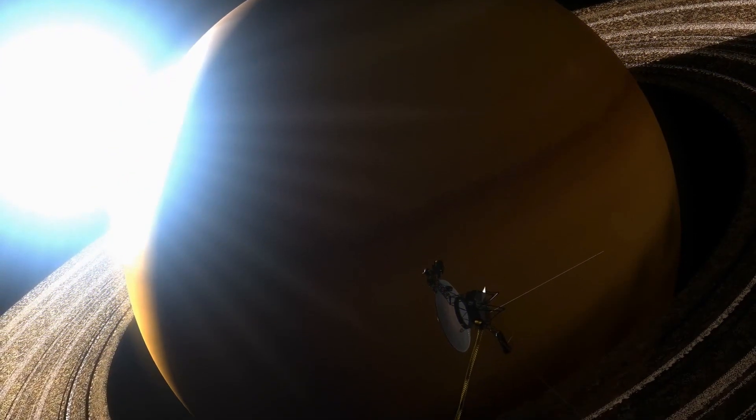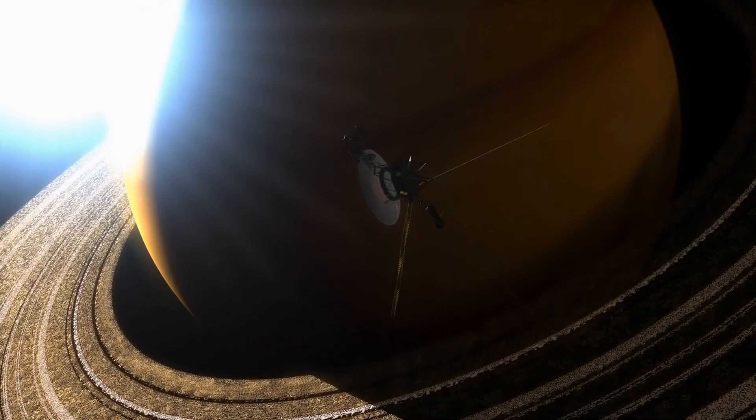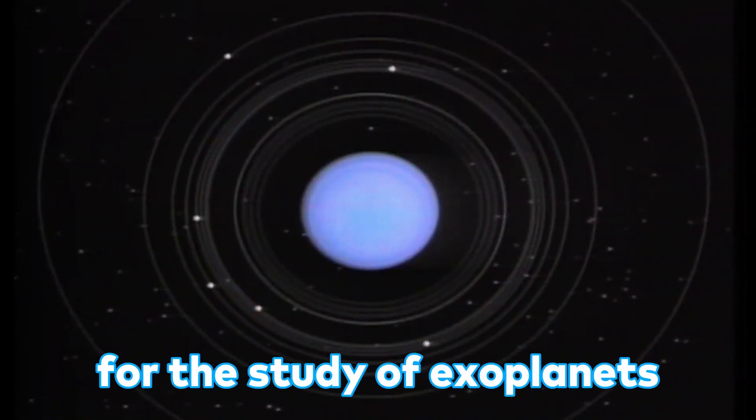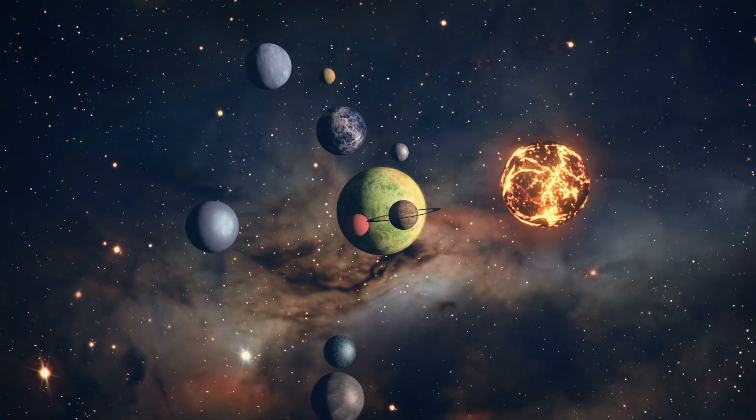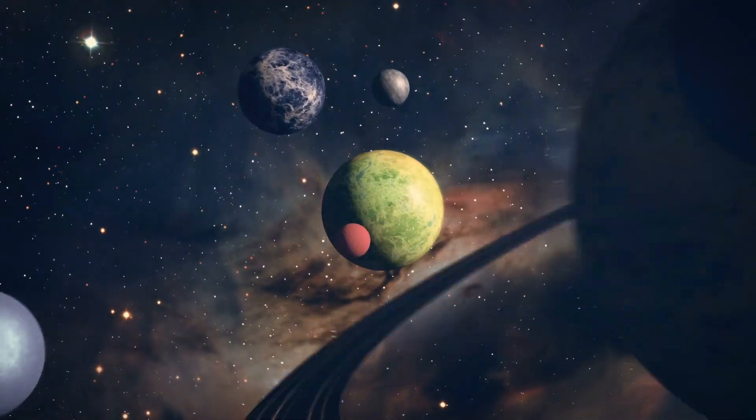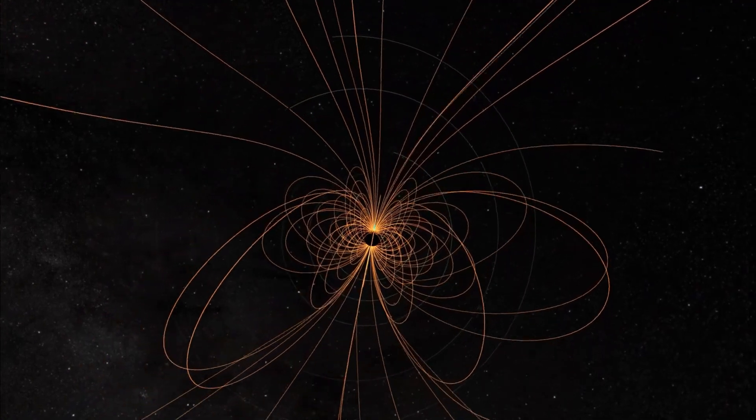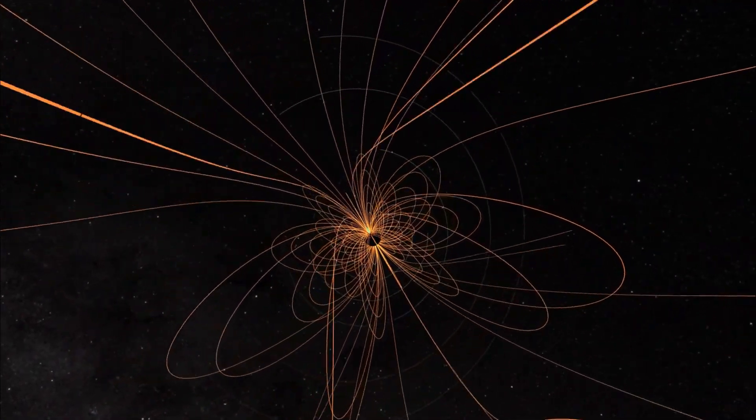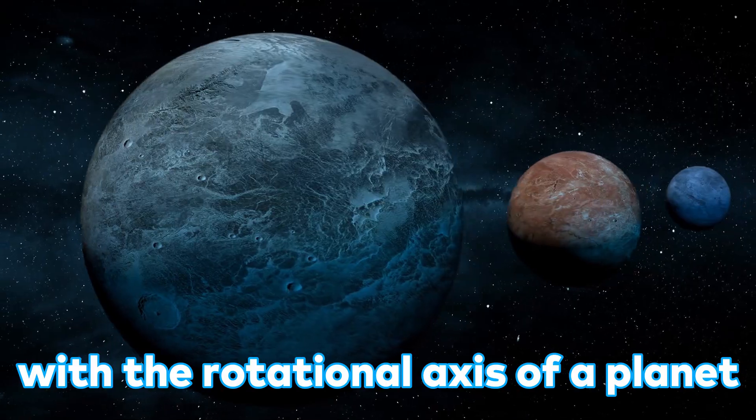What's more, is that the finding also had implications for the study of exoplanets. This is because the discovery shows that magnetic fields of planets can vary greatly from one to another and that magnetic fields are not necessarily aligned with the rotational axis of a planet.